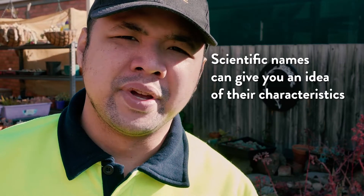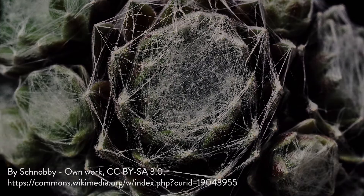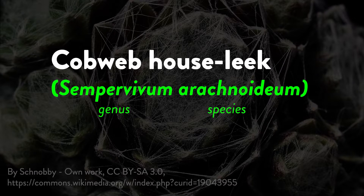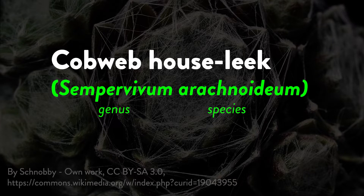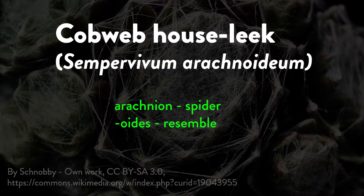By having an organized classification system such as taxonomy, you would be able to determine the characteristics of a specific plant by looking up its lineage. Take Sempervivum arachnoideum as an example — commonly known as cobweb houseleek. The genus Sempervivum comes from 'semper' meaning forever and 'vivus' meaning living — literally 'forever living.' Sempervivum are perennial plants, hence the name. Arachnoideum comes from 'arachnion' meaning spider, plus the suffix 'oides' meaning resemble — literally 'spider-like,' an obvious reference to the cobweb-like growth on the leaves.